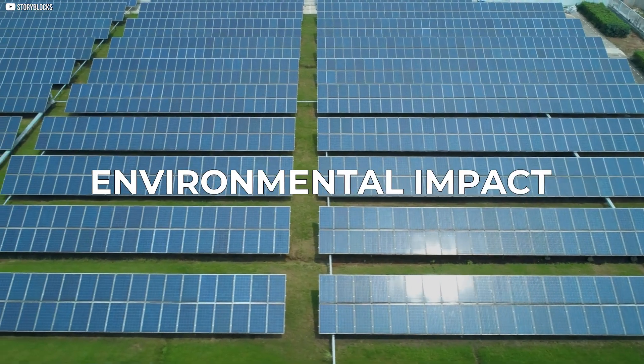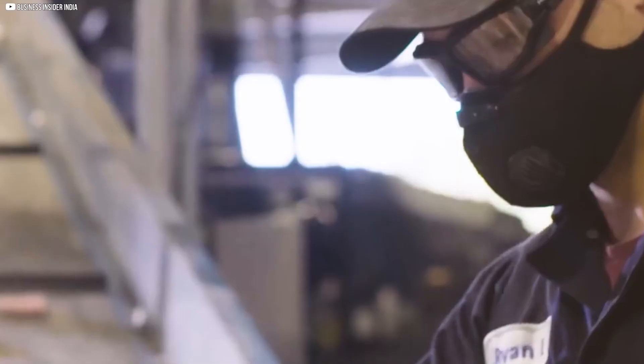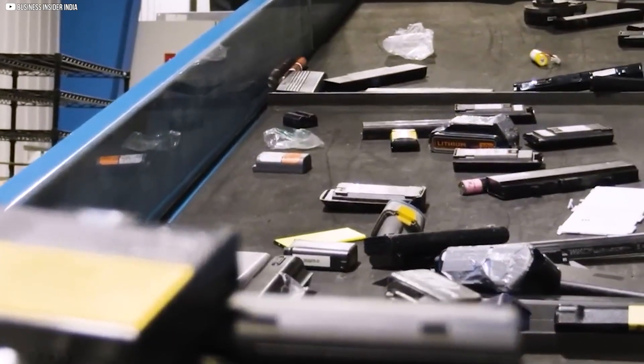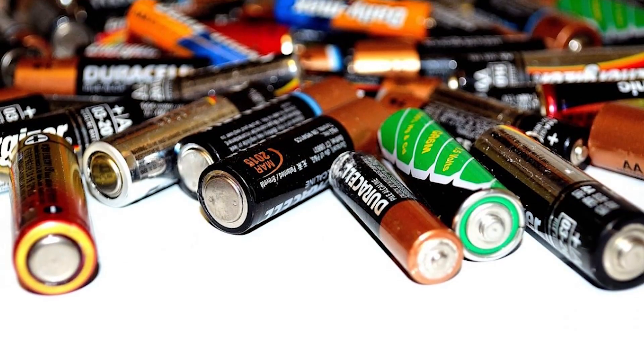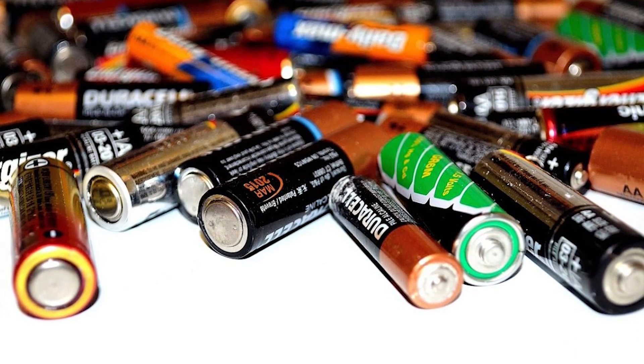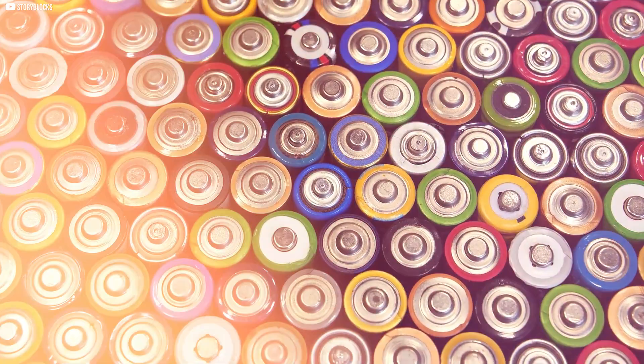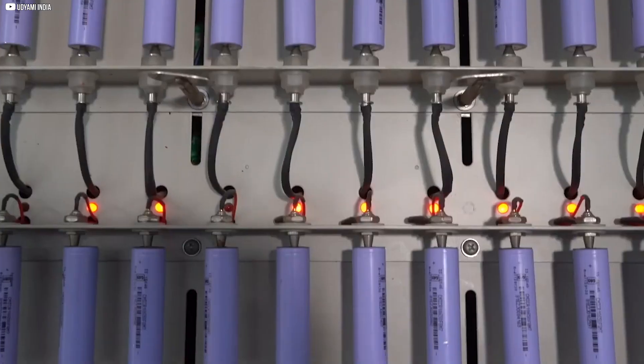Environmental Impact. Every year, tons of used batteries pile up. Most still have power, but they're thrown away because they can't hold a full charge. Recycling helps, but it's slow and messy. Some parts can't be reused, and others leak, polluting the environment. What if we didn't have to throw them away? This breakthrough lets us give old batteries a second life. By fixing old batteries, we reduce waste, pollution, and the need for mining.